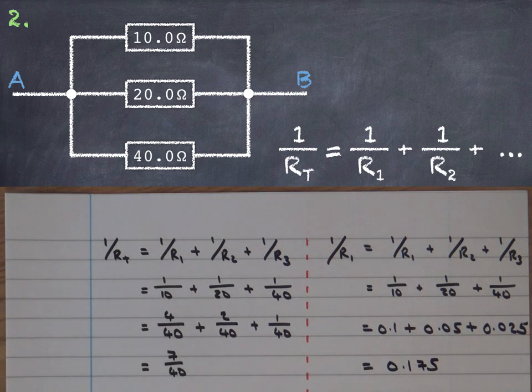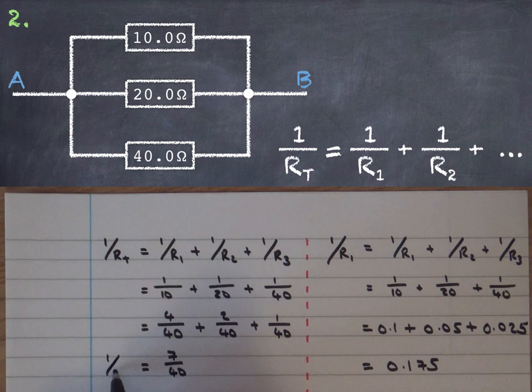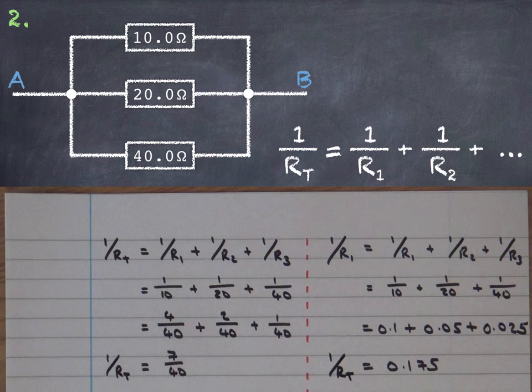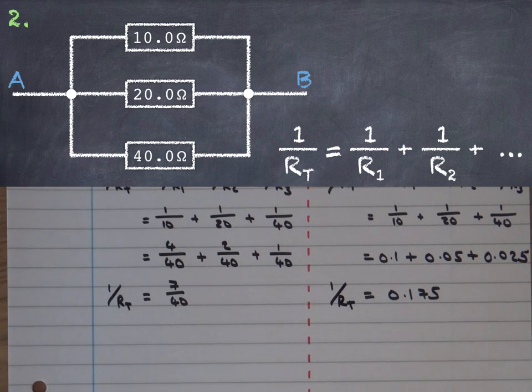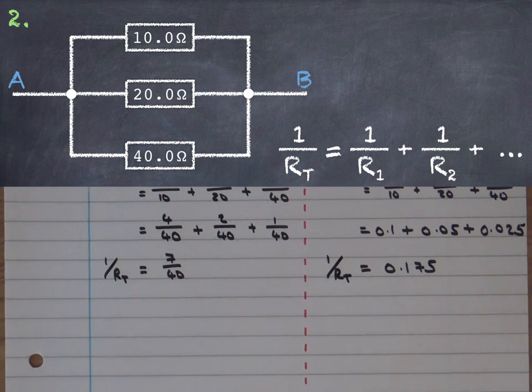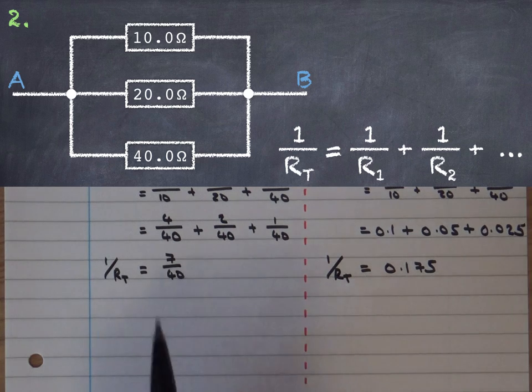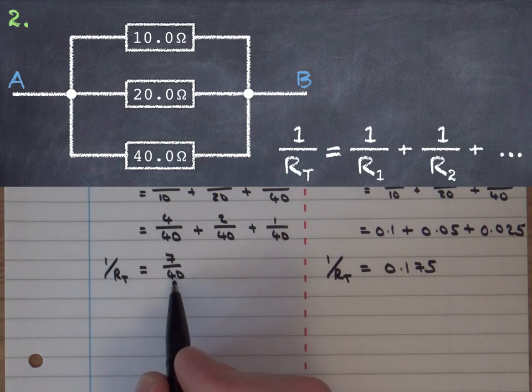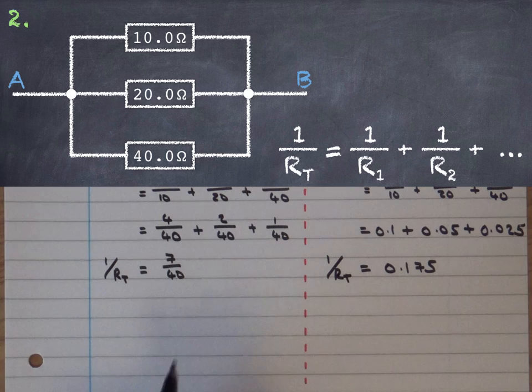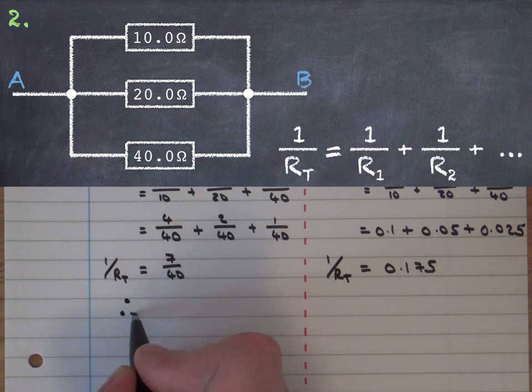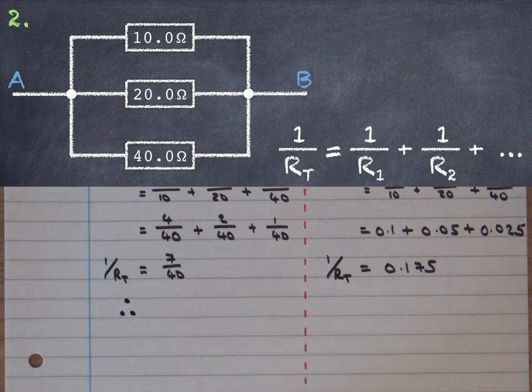So what I've got at this point is of course remember this is not RT and this isn't RT. Both of them are let's say 1 over RT. So I've worked down to the same point using both methods I'll move the paper up at this point. What I need to do next if I'm using this method where I was finding the common denominator if 1 over RT is 7 over 40 then at that point I then want to flip the equation upside down basically.